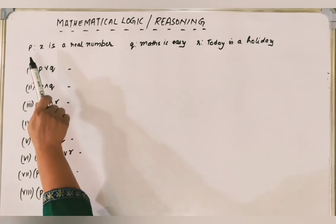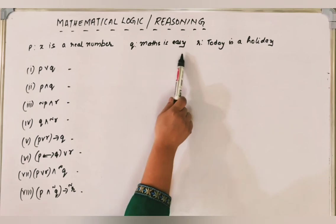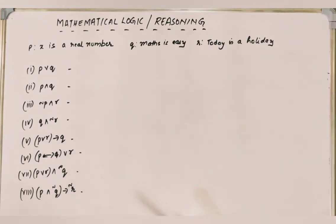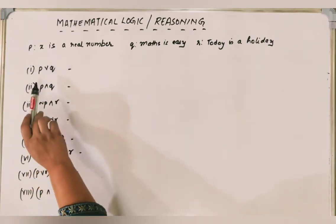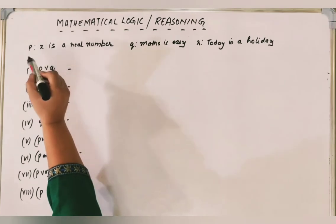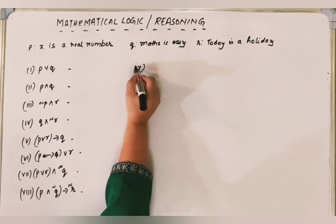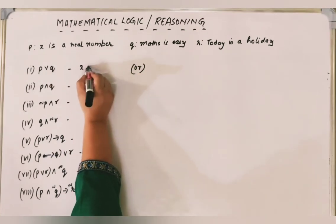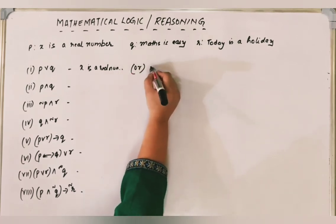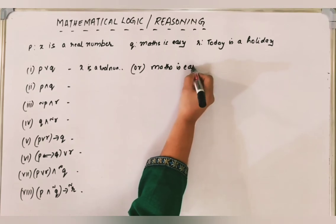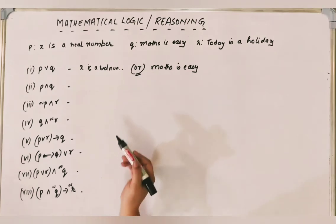Let's take an example with three statements: P is 'X is a real number', Q is 'maths is easy', and R is 'today is a holiday'. We will write these expressions in verbal form. For P OR Q: 'X is a real number OR maths is easy' — just put OR as the connector between the two statements.